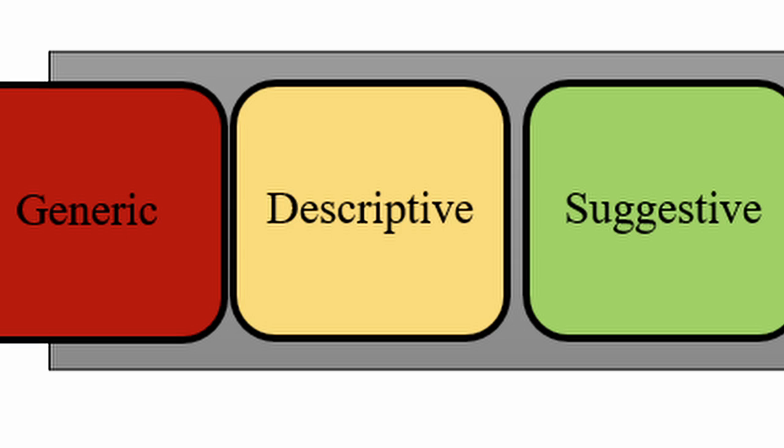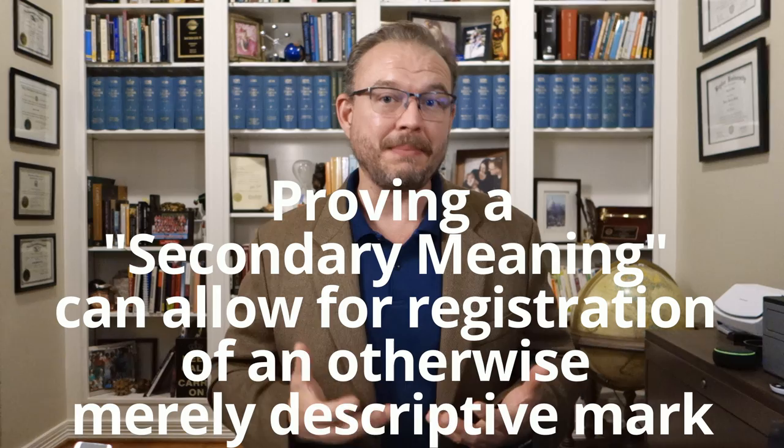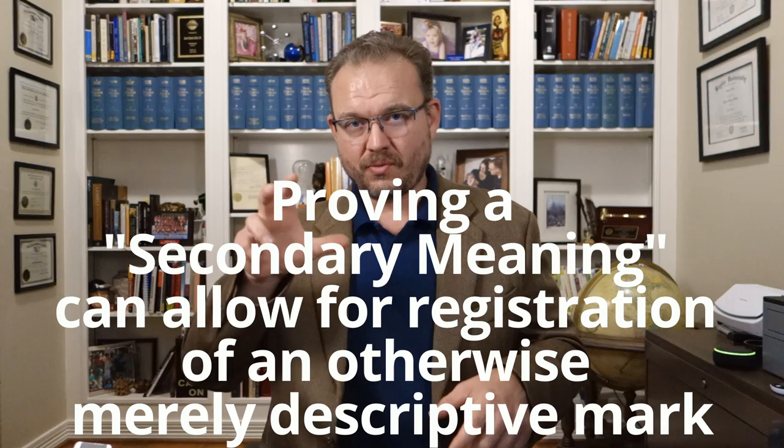Next in the spectrum is descriptive. An example would be if I wanted to sell yogurt and I wanted to call the brand of yogurt that I sold "creamy." If creamy is my brand, it would probably be rejected as descriptive. But there is a way to get it registered if I've been operating under that brand for long enough that I can provide evidence to the USPTO that there's a secondary meaning in the marketplace, or in the mind of the consumers when they're thinking about creamy in relation to my brand of yogurt.